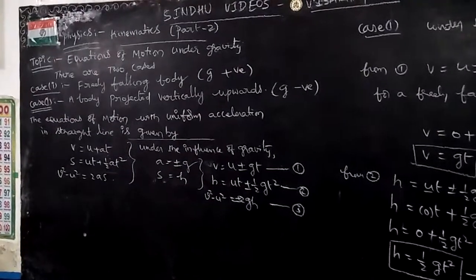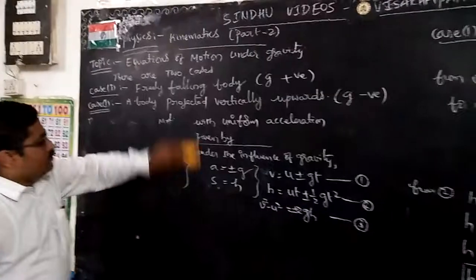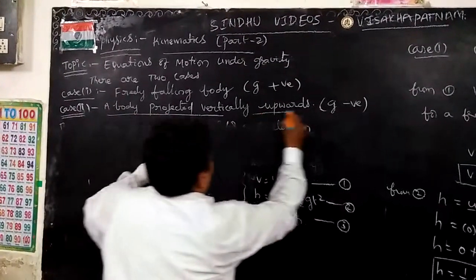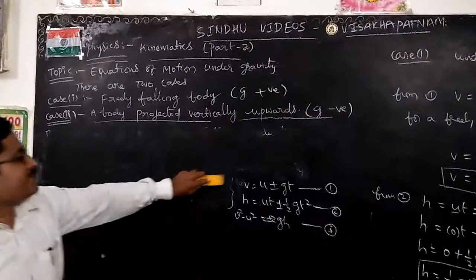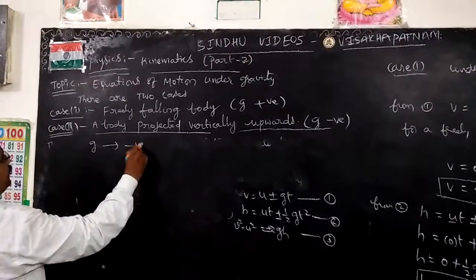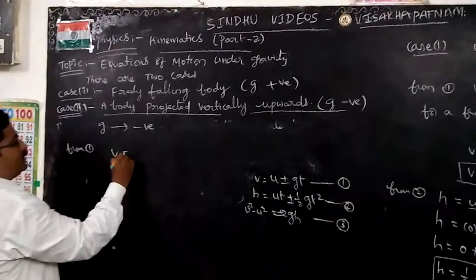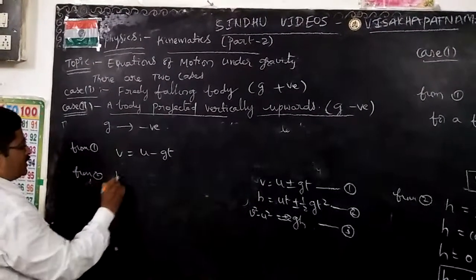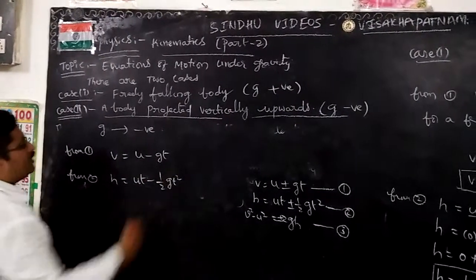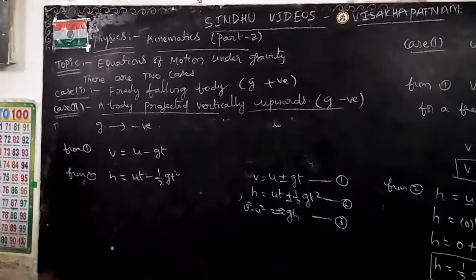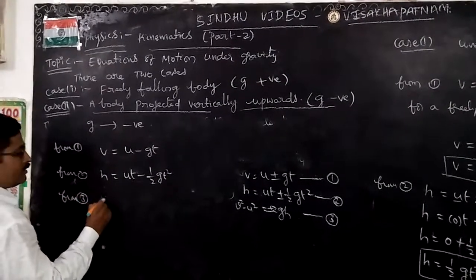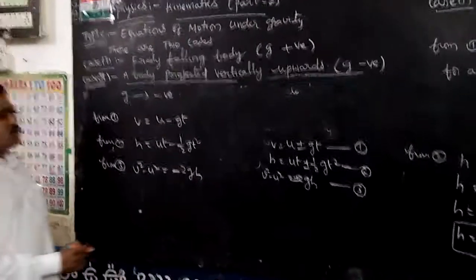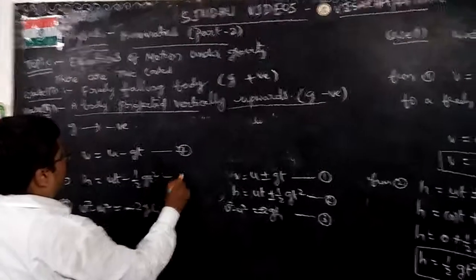Let us see case 2. For a body projected vertically upward, when a body is projected vertically upward, the acceleration due to gravity G is taken as negative. Then from equation 1: V = U - GT. From equation 2: H = UT - ½GT². Here ±G becomes -G. From equation 3: V² - U² = -2GH, where ±2GH becomes -2GH. These are equations number 7, 8, and 9.